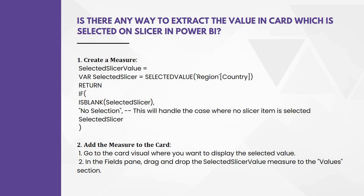The next question: is there any way to extract the value in a card which is selected on a slicer in Power BI? Here we can use the SELECTEDVALUE DAX function. We can create one variable called selected slicer and use the SELECTEDVALUE DAX function, mentioning the column which is added into the slicer and which value we want to show in the card. I am using region/country as an example. Then apply an IF condition: if it is blank, it will handle the case where no slicer item is selected and show 'No Selection'; if it is not blank, it will provide the selected slicer value. Once this measure is created, add it into a card visual.